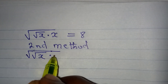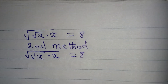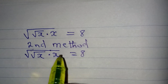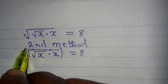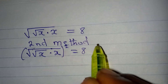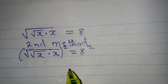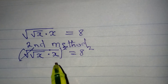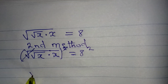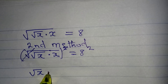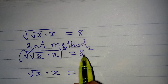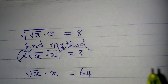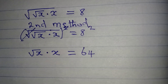For the second method, the equation is: square root of square root of x, multiplied by x, equals 8. The first step is to remove the outer square root by squaring both sides. The square root and the square cancel each other, giving us square root of x multiplied by x, equal to 8 times 8, which is 64.